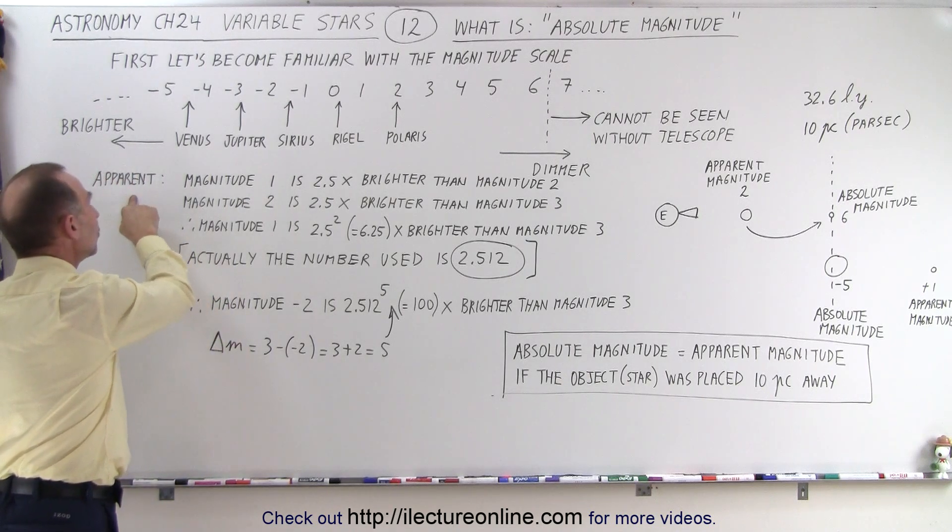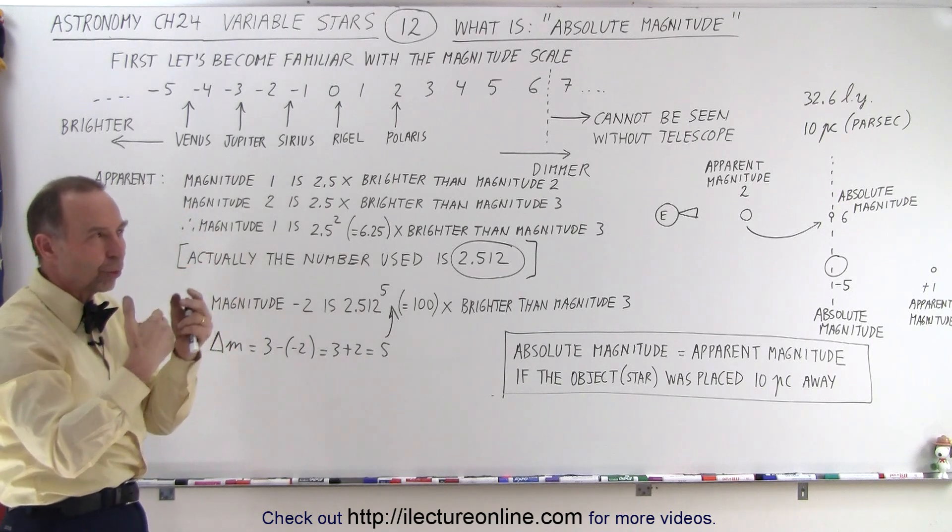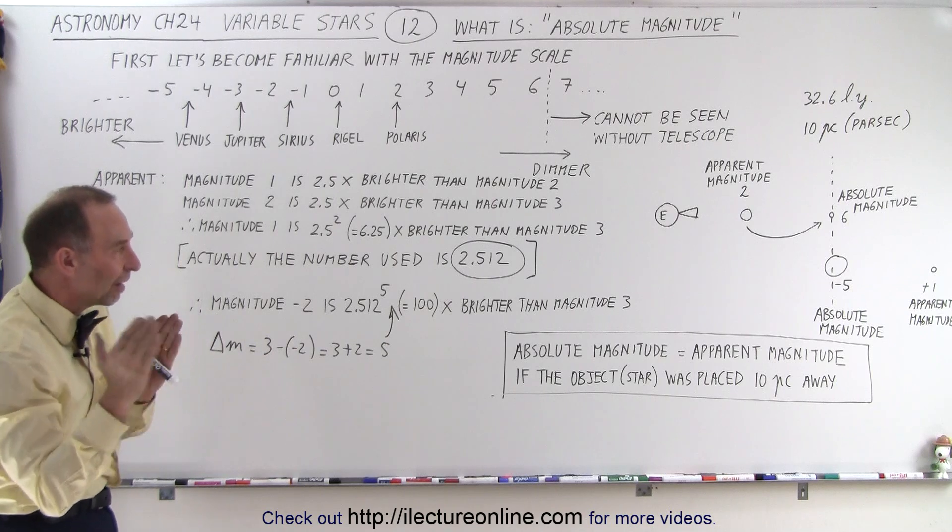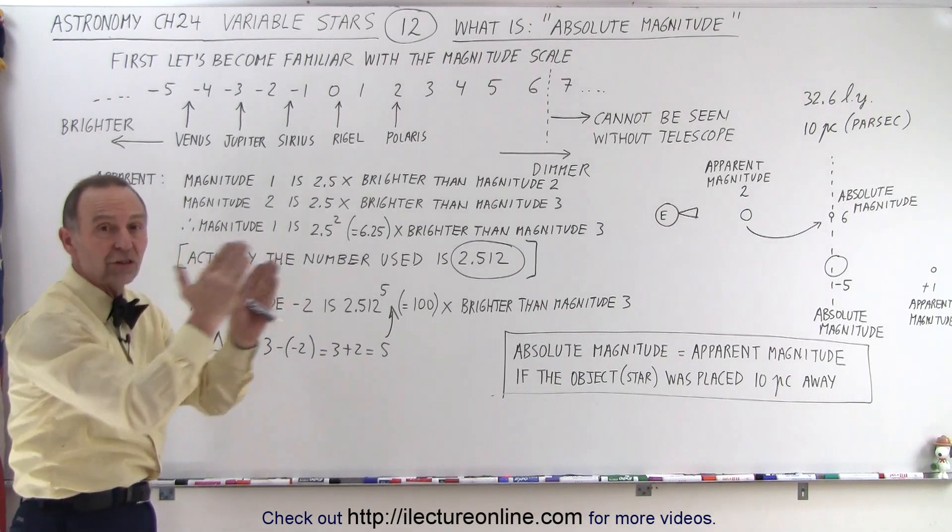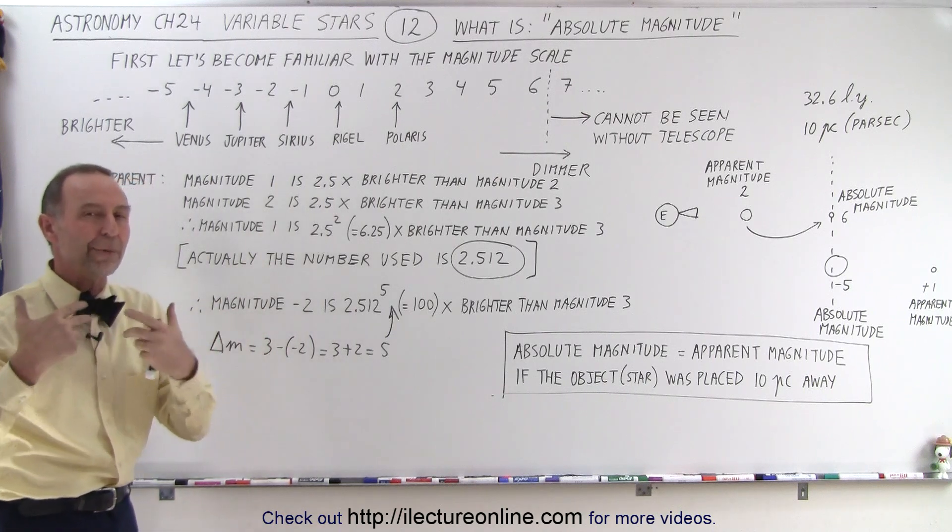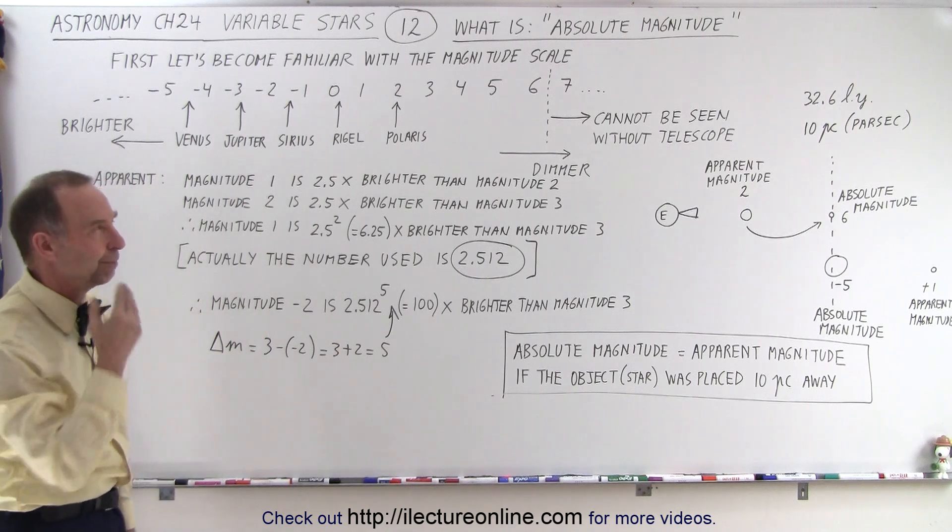So apparent magnitude means as seen from the earth. We take a telescope, we look at it, we take pictures or we take measurements of the brightness of the object using different filters, and from that we can tell it is this bright, and that's called the apparent magnitude. How bright it appears to us as seen from the earth, and that's where the word apparent comes from.